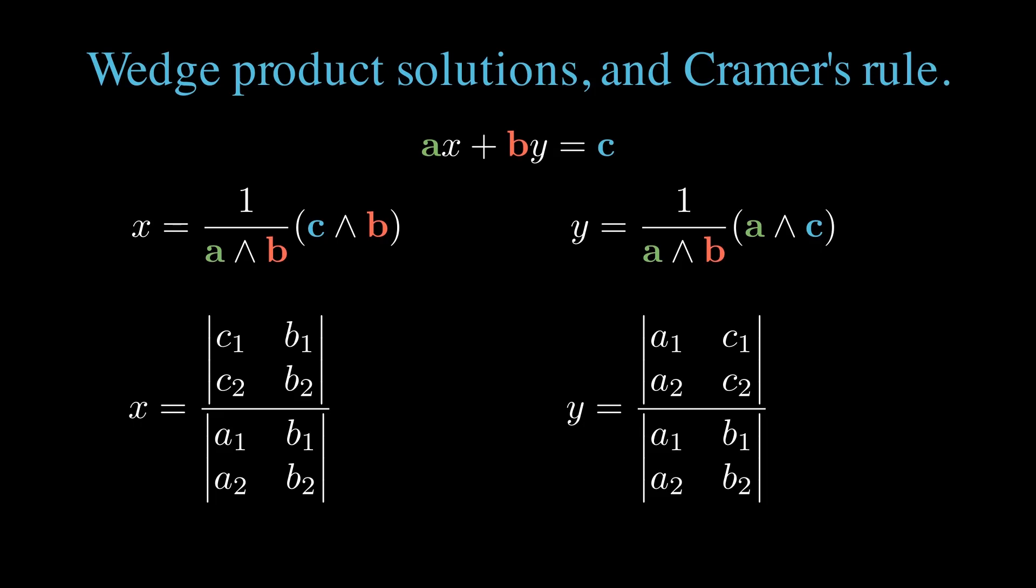In the denominator, we have the determinant of the components of a and b. In the numerators, we have the determinants of the components of either cb or ac, depending which variable we're solving for. This is Kramer's rule's solution for a two-variable system.